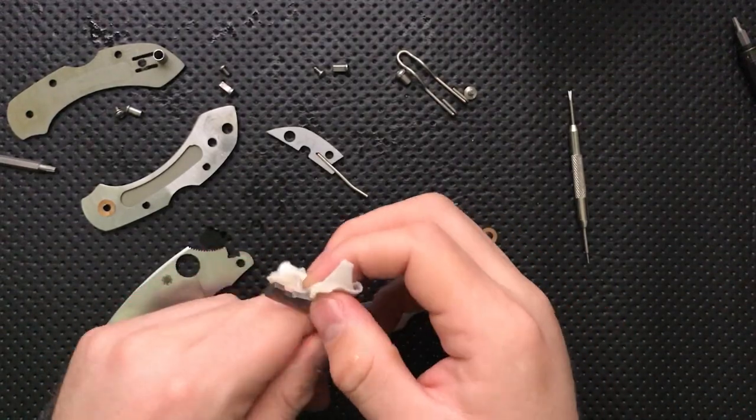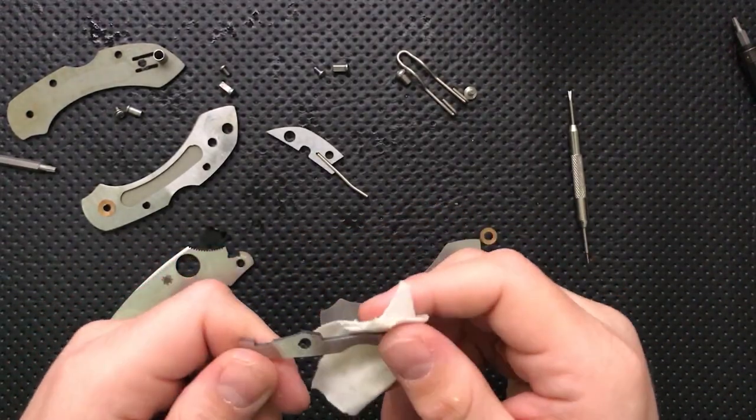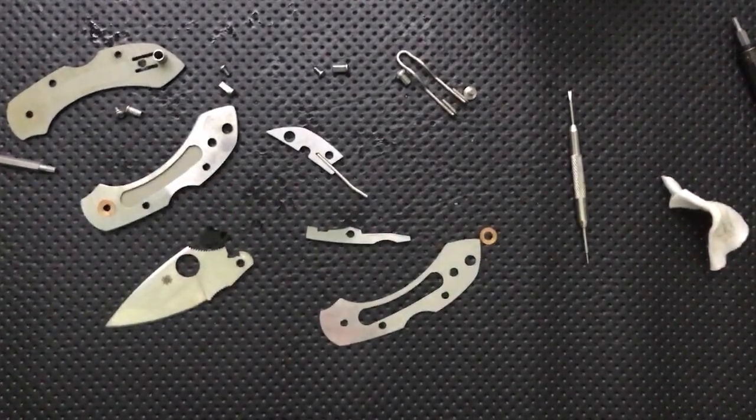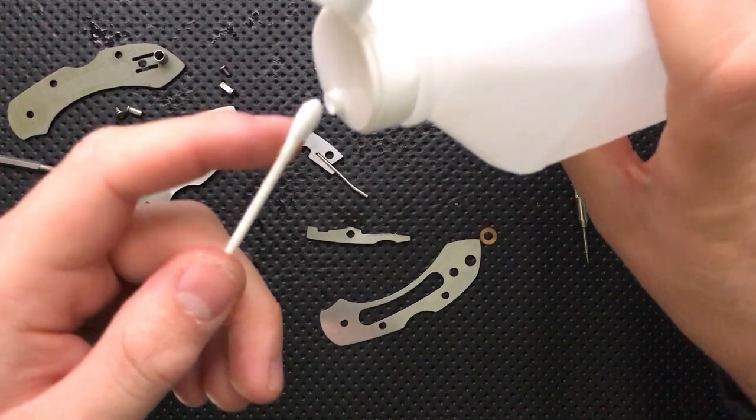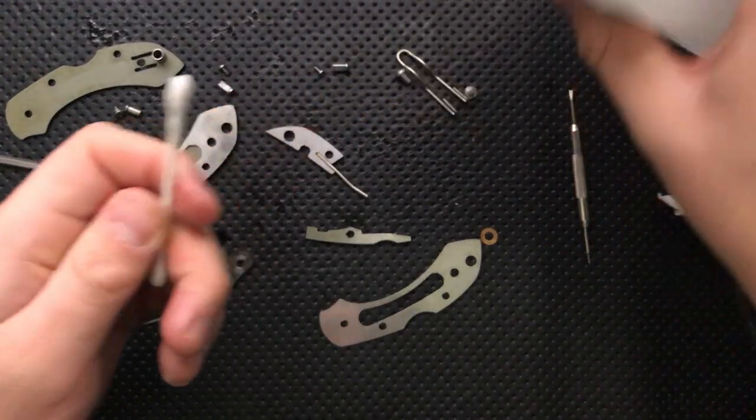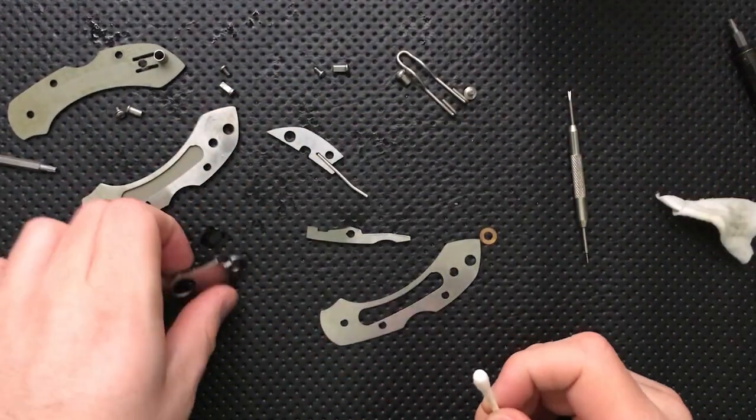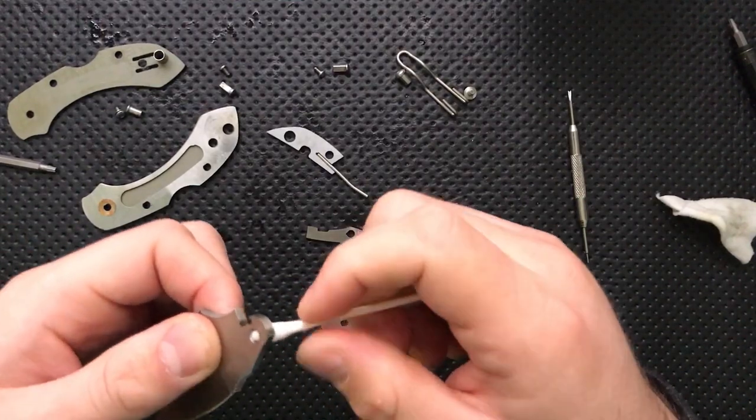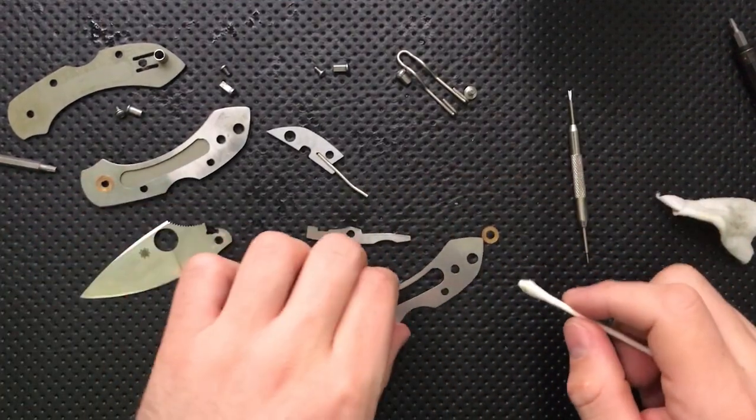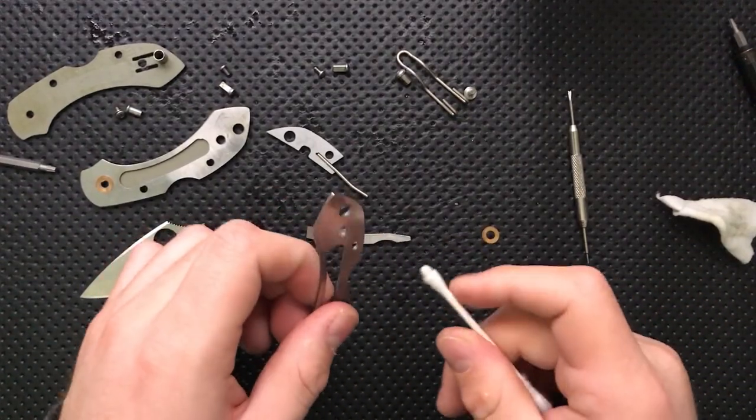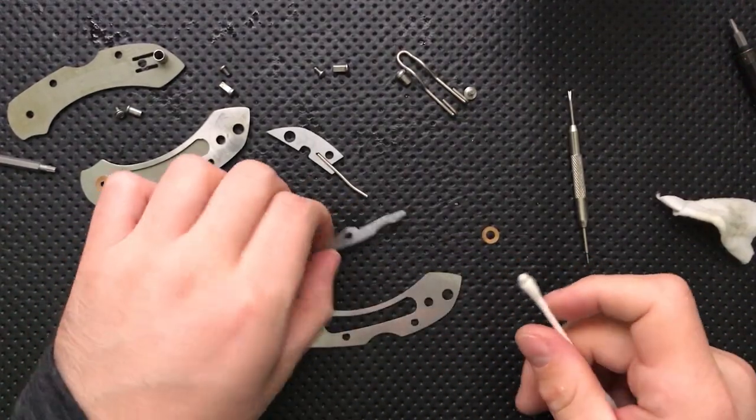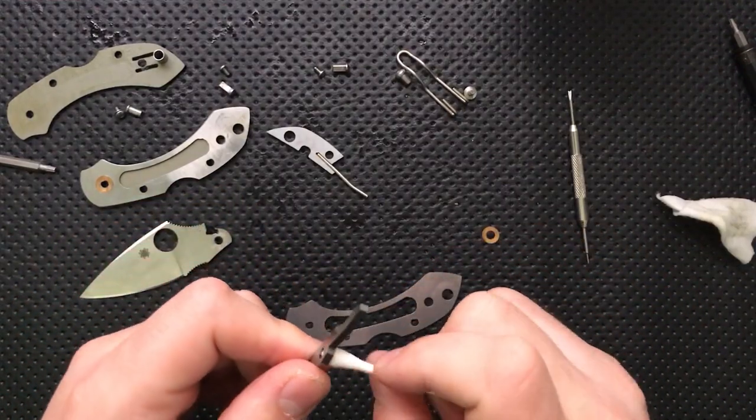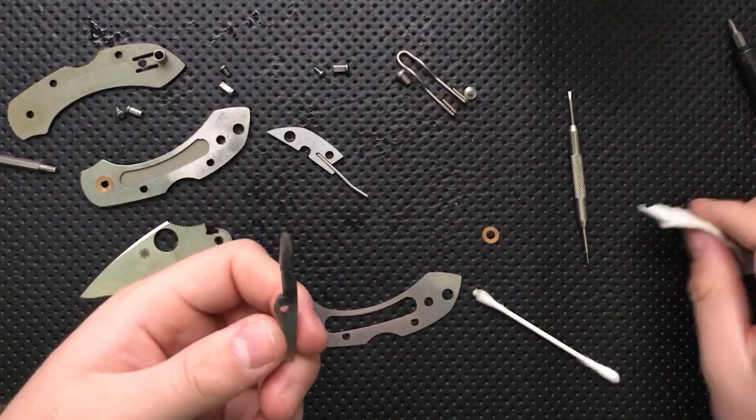I'm gonna go ahead and leave the back lock spring in there because it doesn't want to go out of there, and that's just fine by me. There's no problem with it staying in place. Now I'm going to clean off the back lock here. Cleaning, cleaning, cleaning. This is a really interesting little knife, the G10 Dragonfly. It's very strange. You know, the Dragonfly, the normal FRN Dragonfly is obviously a great knife. It's a gem.